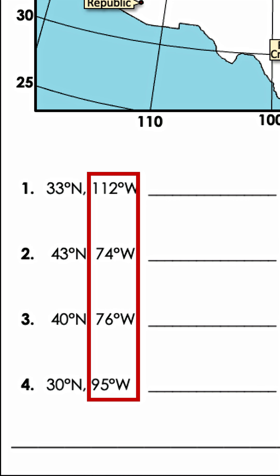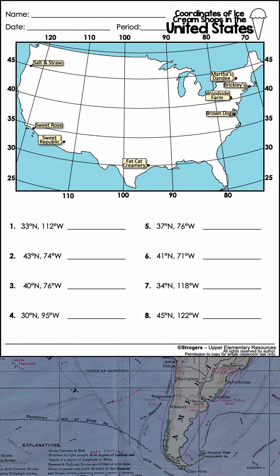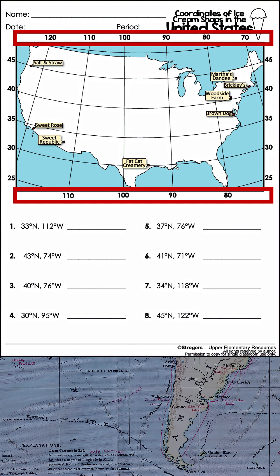The second number of the coordinates is the longitude. It tells you how many degrees east or west the location is from the prime meridian. On your maps, you'll find the longitude numbers and lines here. Longitude lines are always vertical.